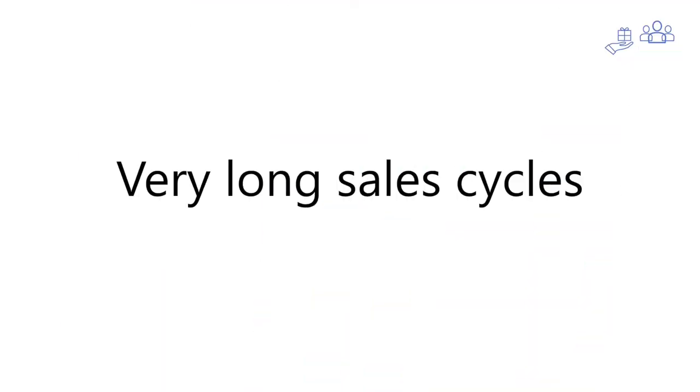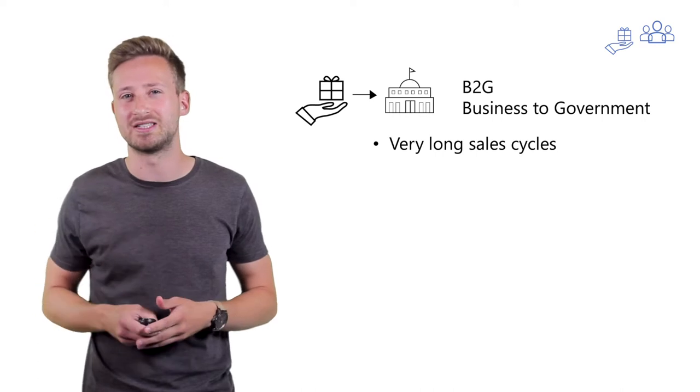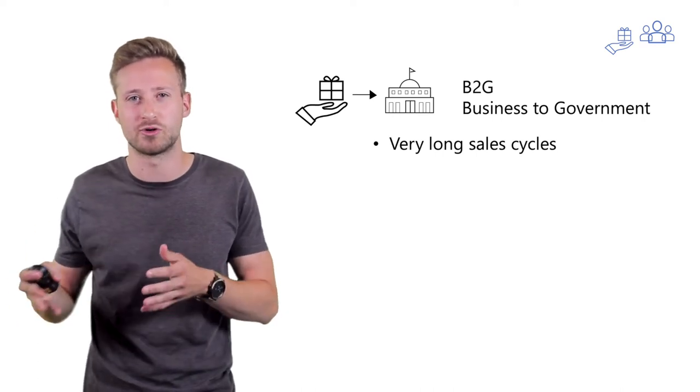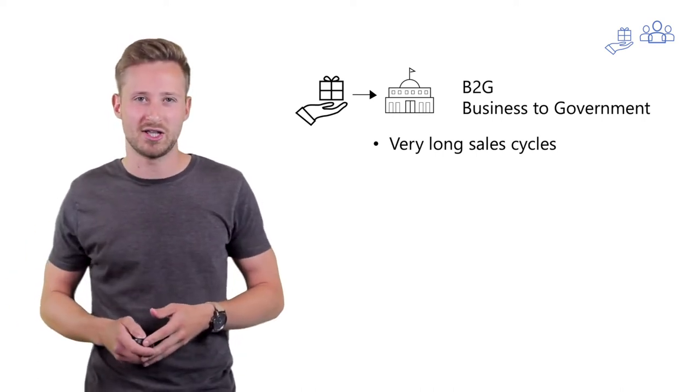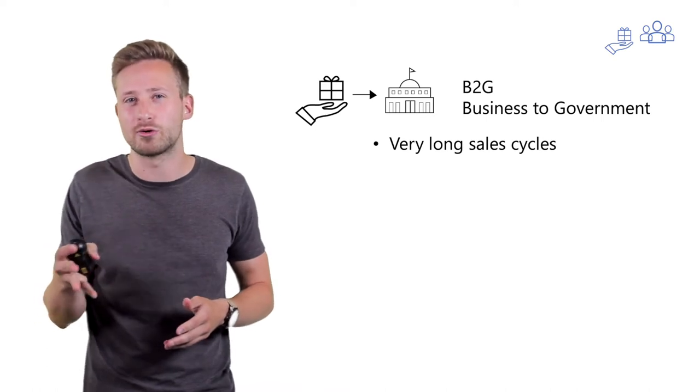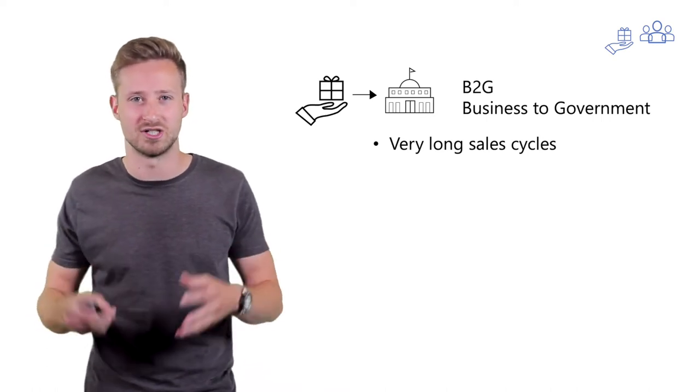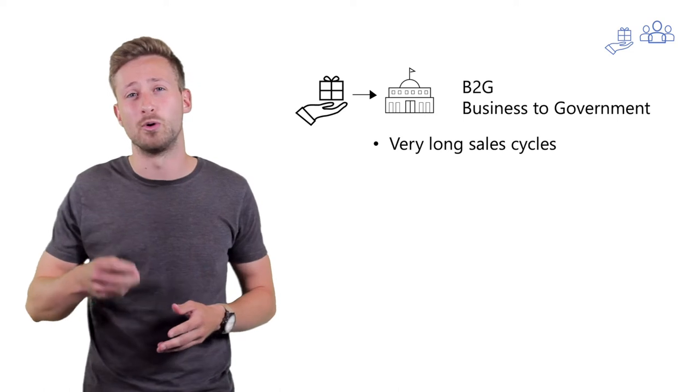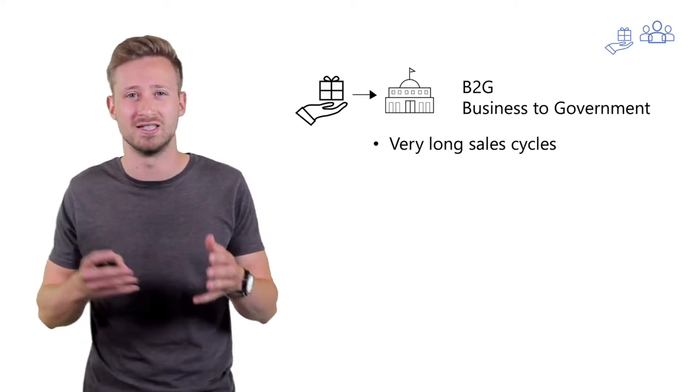Now, compared to all other sales dynamics, B2G companies tend to spend the most amount of time trying to complete the sale. That's partly because of the level of bureaucracy that exists in government agencies, as well as the fact that people working for the government tend to switch positions quite easily.